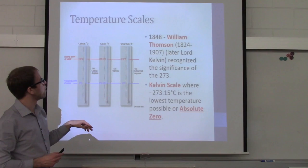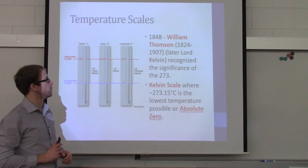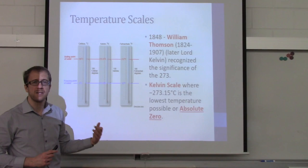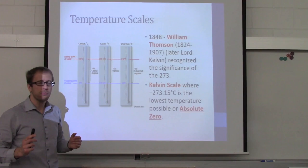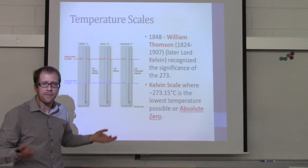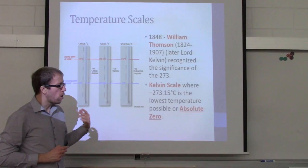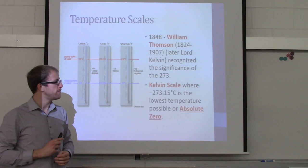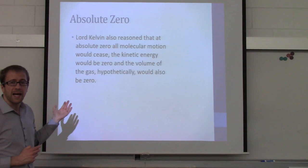This pointed to the lowest possible Kelvin temperature. In 1848, William Thompson — later recognized as Lord Kelvin — saw the significance of negative 273.15 degrees Celsius. From this, he created the Kelvin scale. He said that must be the coldest temperature possible, because how could you have negative volume? You can't. The lowest volume possible is zero. So he called that temperature absolute zero, and that's where he started his temperature scale — at zero Kelvin. He reasoned that at absolute zero, all molecular motion would cease and there would be no kinetic energy.